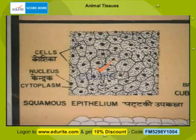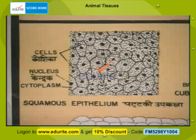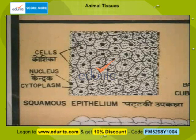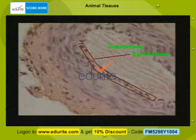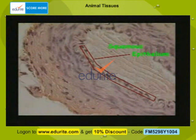Epithelial tissue is a group of thin-walled tissues which have a prominent nucleus and a lot of cytoplasm. There are different kinds of epithelial tissues. The squamous epithelium is made up of thin-walled flattened cells with a prominent nucleus. This is found on the lining of organs like the alveoli of lungs, kidney tubules, blood vessels, etc.